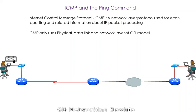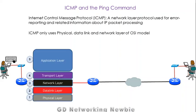Hi everyone. Today we are going to discuss ICMP, or Internet Control Message Protocol. ICMP is a network layer protocol that is used for error reporting and some other related information about IP packet processing. ICMP uses the physical layer, data link layer, and the network layer of the OSI model. So these three layers are used by the ICMP protocol.